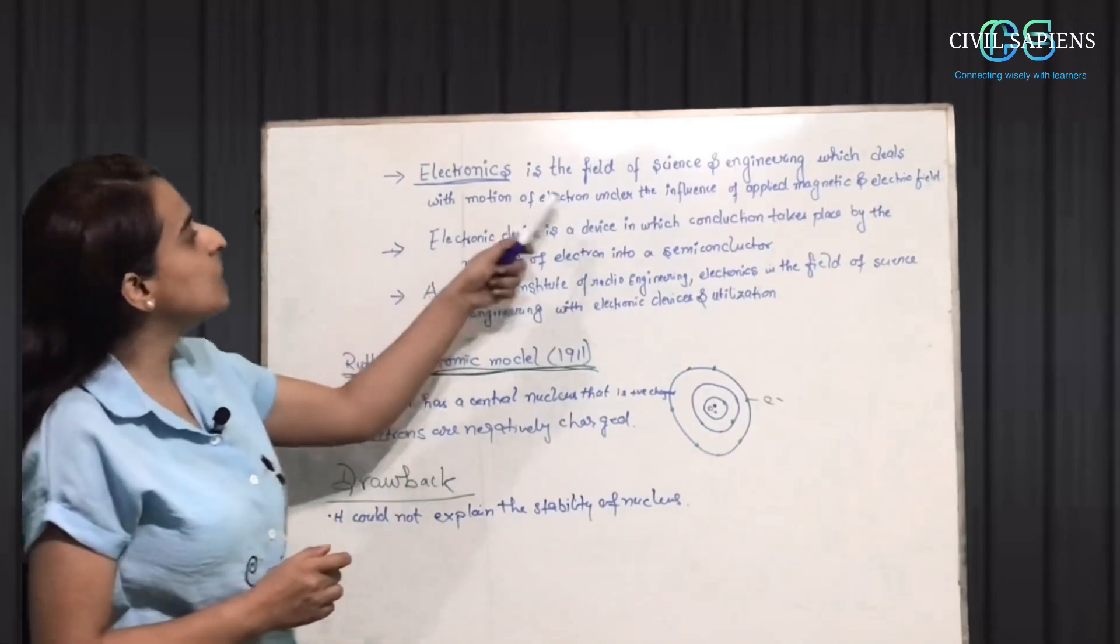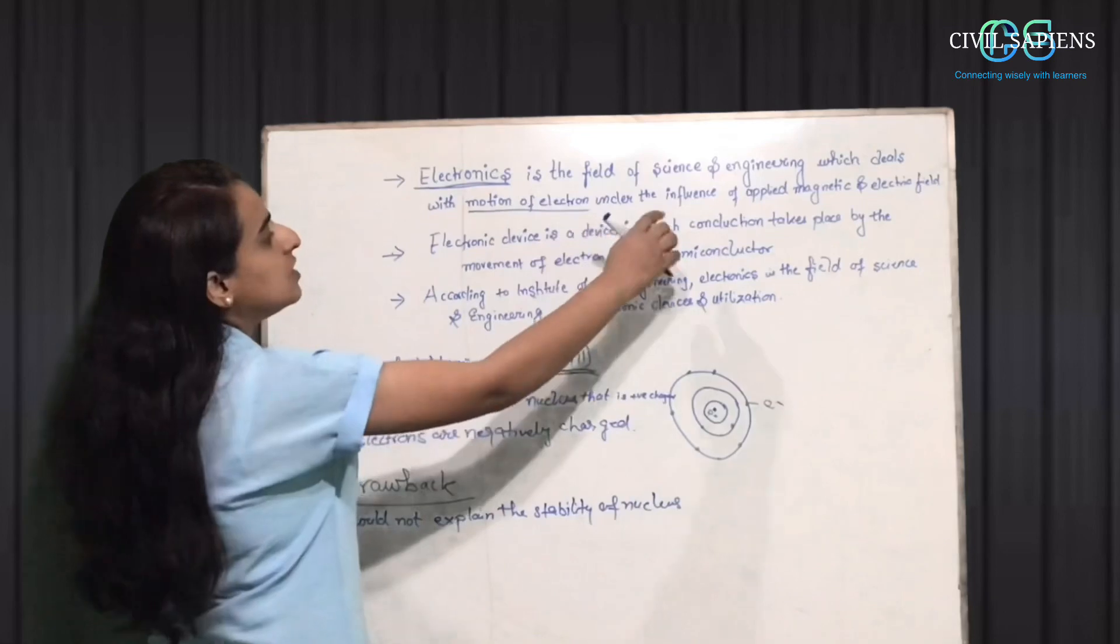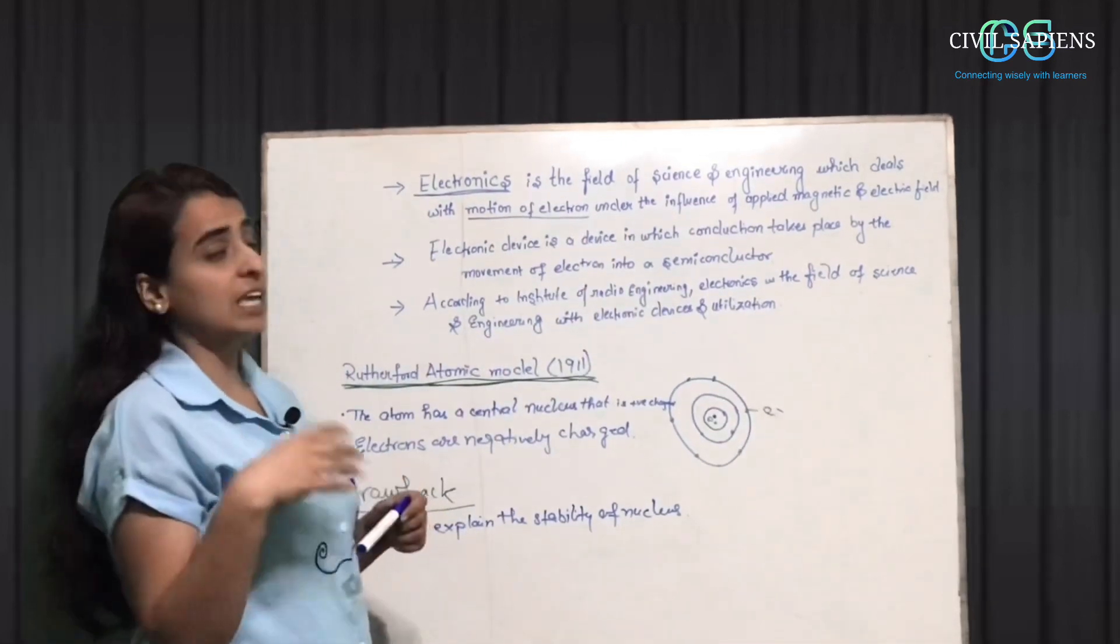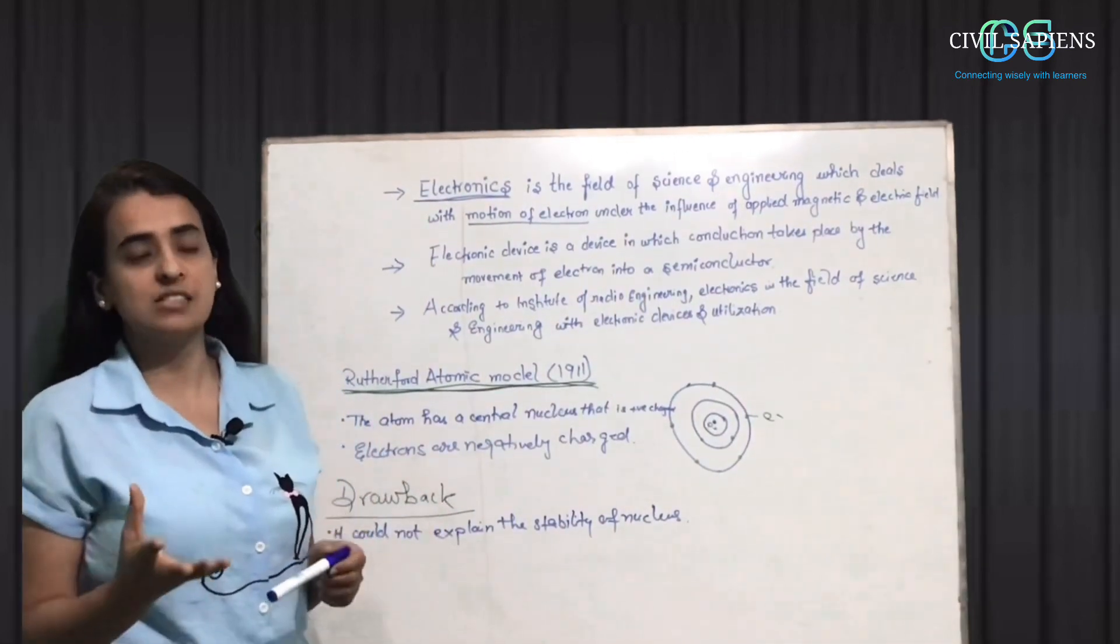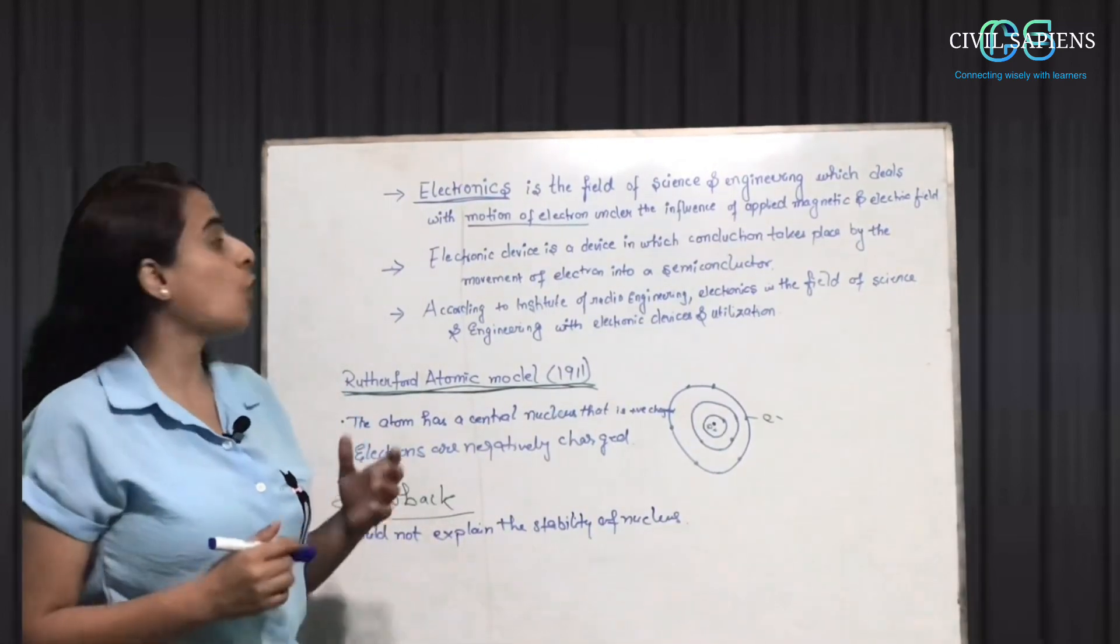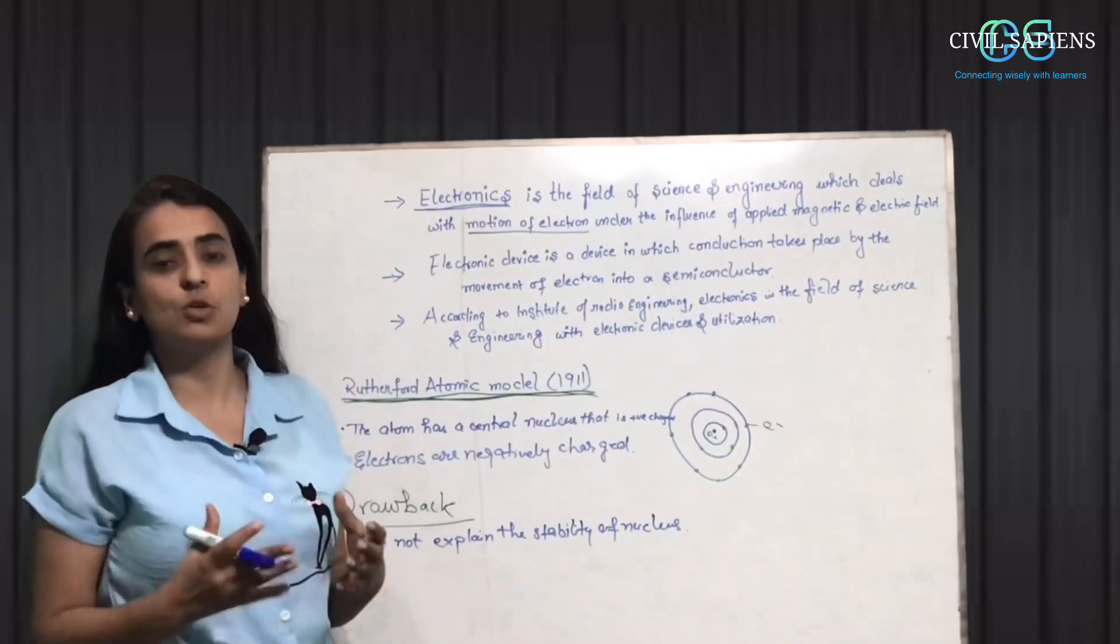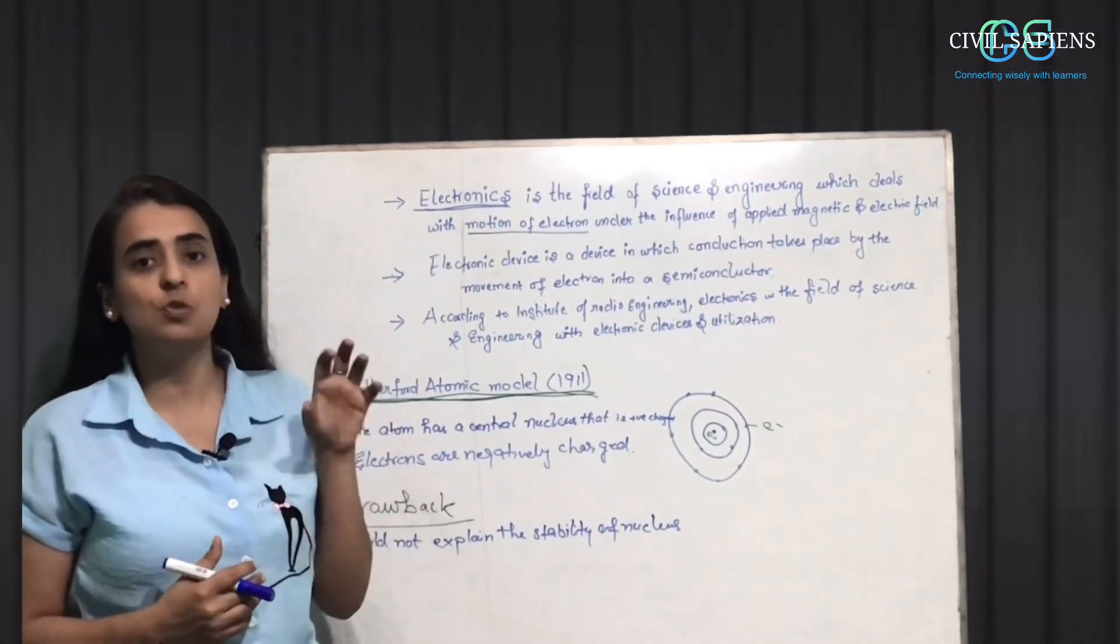Electronics is the field of science and engineering which deals with the motion of electrons under the influence of magnetic and electric field. Electronics is a branch of engineering and science where we will mainly study about electrons, the movements of electrons, how are they in the electric field and magnetic field.